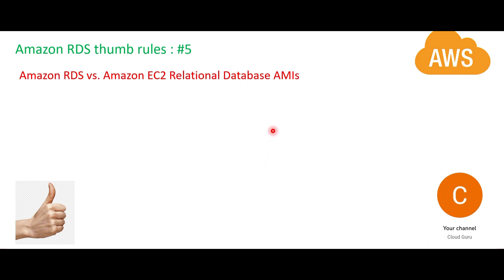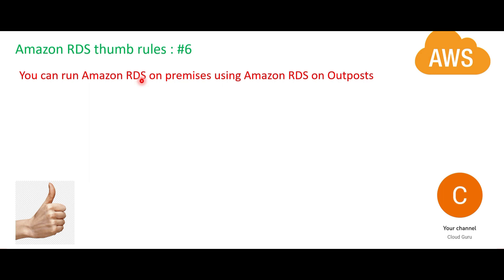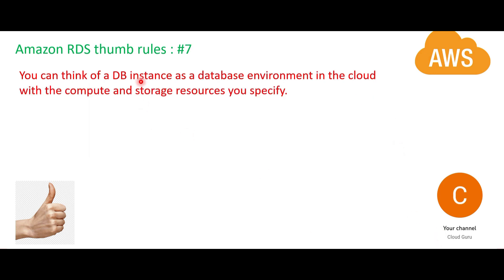It is less expensive on EC2 because a lot of work will be done by you. Importantly — and this is a key point for the AWS Cloud Practitioner exam — RDS is a service also available on premises, not only on AWS. You can run it on premises using AWS Outposts; you can Google and read about Outposts separately.